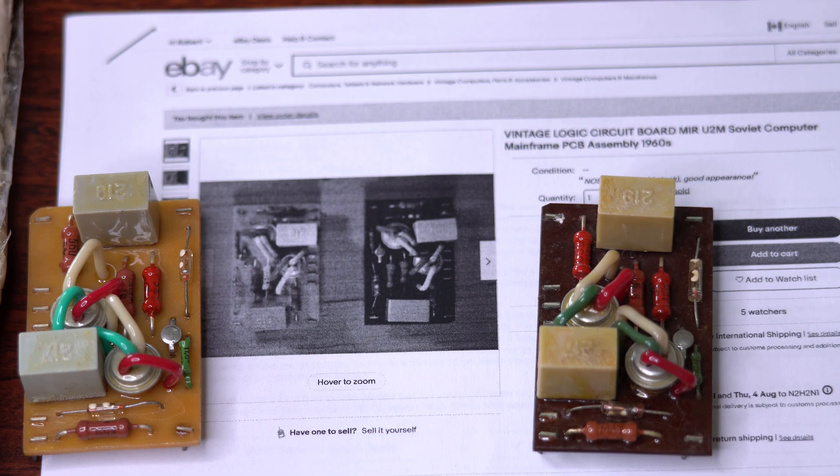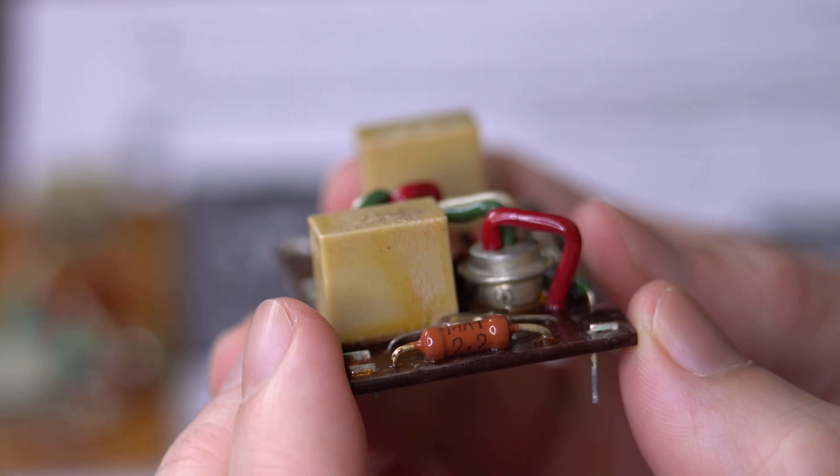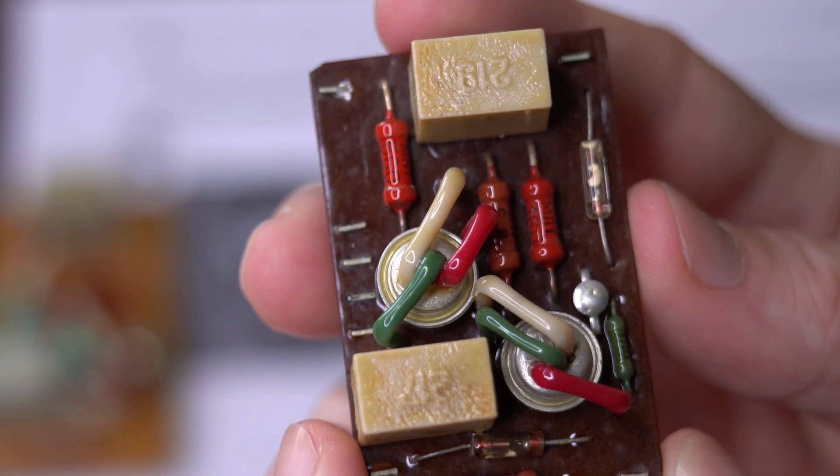And next up, we have these two circuits that look basically identical, except the color of the board is different. And here's a close-up view of the top and the bottom.